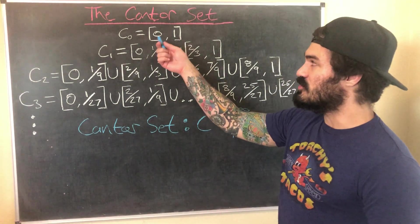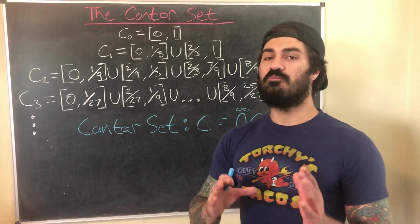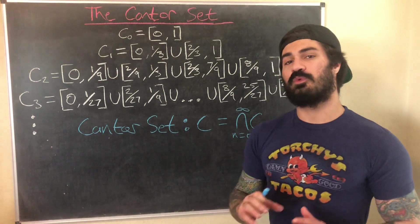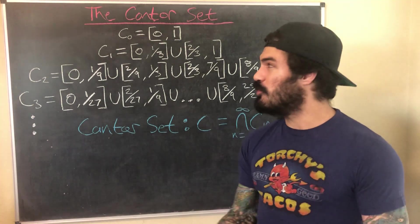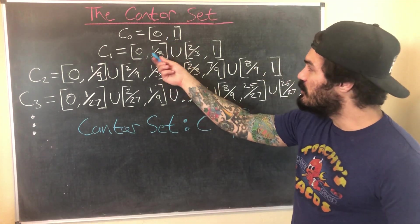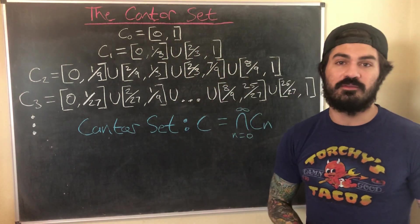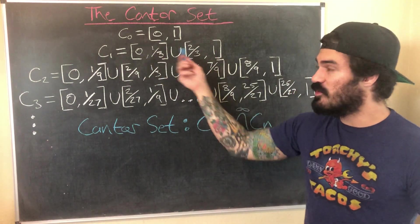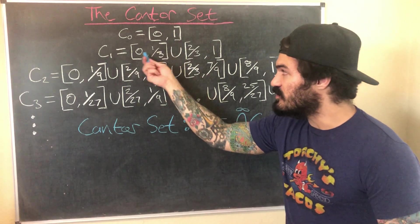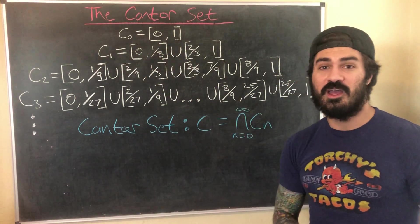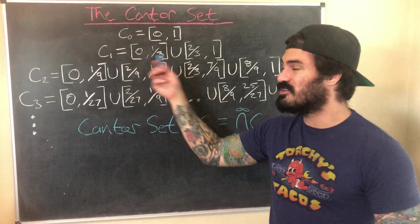Here is how we construct the Cantor set. We start with the closed interval from 0 to 1, and then we remove the open middle third of this interval — that means we're removing the open interval from 1/3 to 2/3. When we remove that, what we're left with are two disjoint closed intervals: from 0 to 1/3, and from 2/3 to 1.